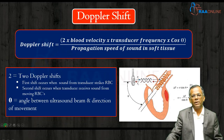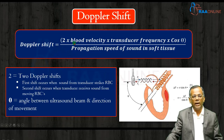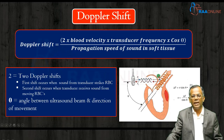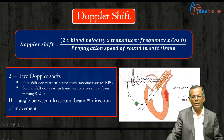The Doppler shift equation is: 2 multiplied by blood velocity, multiplied by transducer frequency, multiplied by cos theta, divided by the propagation speed of sound in soft tissue. The factor of 2 is present because two Doppler shifts occur: the first when sound from the transducer strikes the moving RBC, and the second when the transducer receives sound from the moving RBCs. Theta is the angle subtended between the ultrasound beam and the direction of movement.